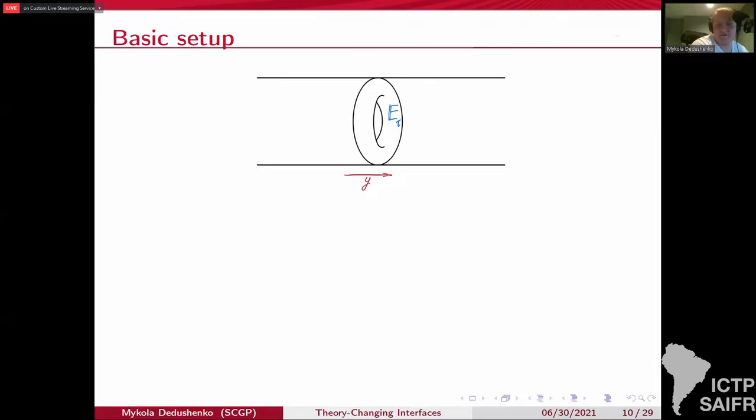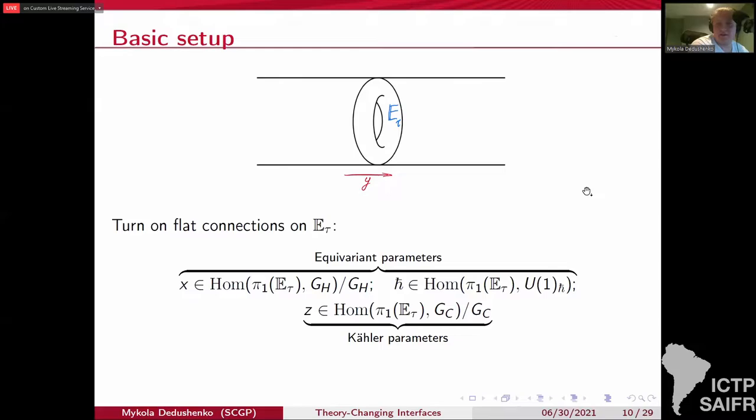I will mostly focus on stable envelopes and explain R matrices later. In our basic setup, we also turn on flat connections for the flavor symmetry and for the special H-bar symmetry, and also for the topological symmetry. These topological connections are usually referred to as Kähler parameters. And these are equivariant parameters. When you reduce to two dimensions, Kähler parameters are replaced by theta angles. And in one dimension, they disappear completely. You only have equivariant parameters in the one dimensional case.